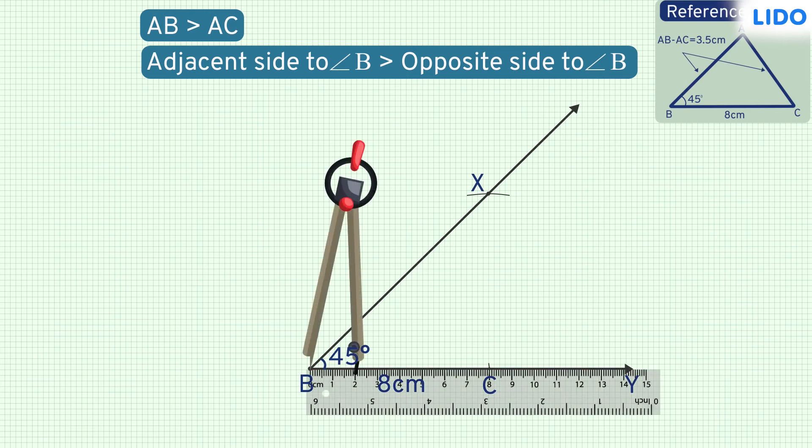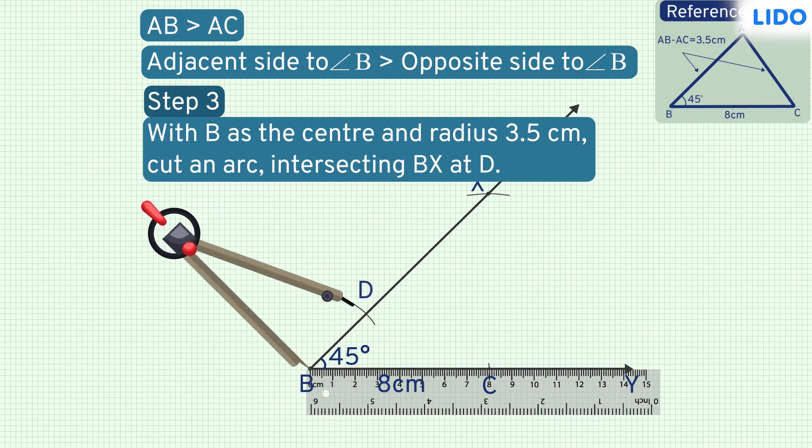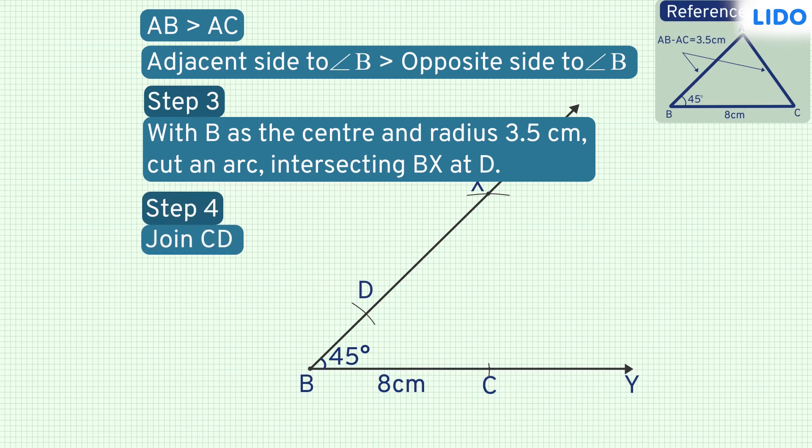So, we construct line segment BD equal to 3.5 cm in the direction of ray BX. Next, we join CD.